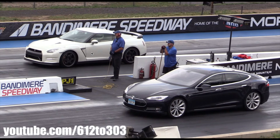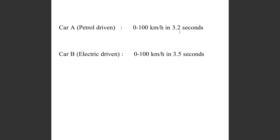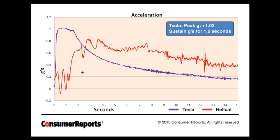This can seem pretty weird, but it's because of the non-constant nature of the acceleration of the cars, which I will show you. Car A is a petrol-driven car which goes from 0 to 100 kilometers an hour in 3.2 seconds, and car B is an electric car which does it a bit slower. Let's look at the acceleration of these two different cars. This is a chart of the acceleration of a petrol-driven car versus an electric car — not the same petrol car as in the picture, but the idea of the acceleration will be the same.